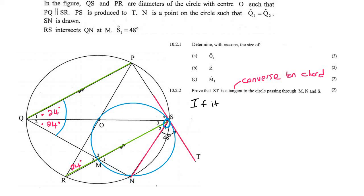If it was a tangent, then S1 would be the same as M1. But we know that M1 is already equal to 48, remember we proved that. And so therefore, S1 is equal to M1.